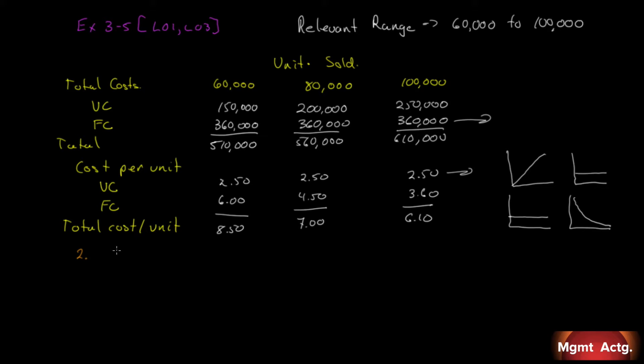So our first entry is sales and we're told that we sold 90,000 units at 750. That gives us $675,000 less our variable costs and we're told variable cost per unit is 250. So all we have to do is multiply the 90,000 by 250. We get 225,000. That gives us $450,000.